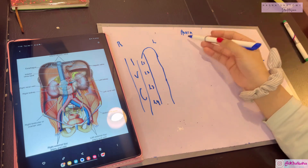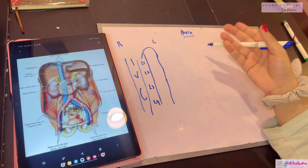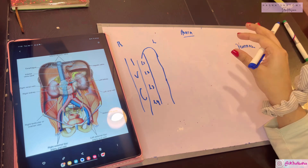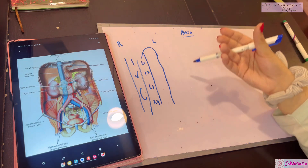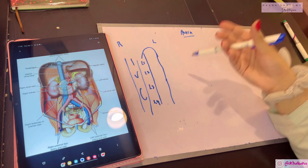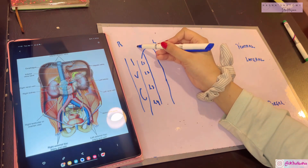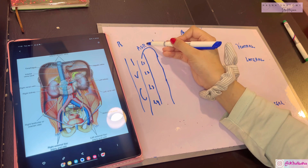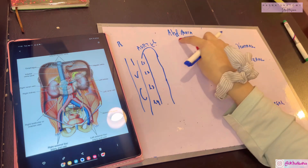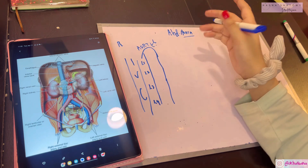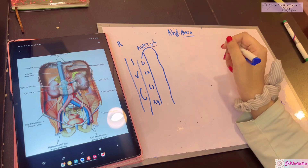The abdominal aorta - we all know that the aorta comes from the heart, directly from the left ventricle, carrying oxygenated blood for the entire body. First it is the descending thoracic aorta, which lies in the thorax. After that it enters the abdomen via the diaphragmatic aortic opening. In the abdomen it is known as the abdominal aorta - our today's topic: origin, course, termination, branches, and clinical points.